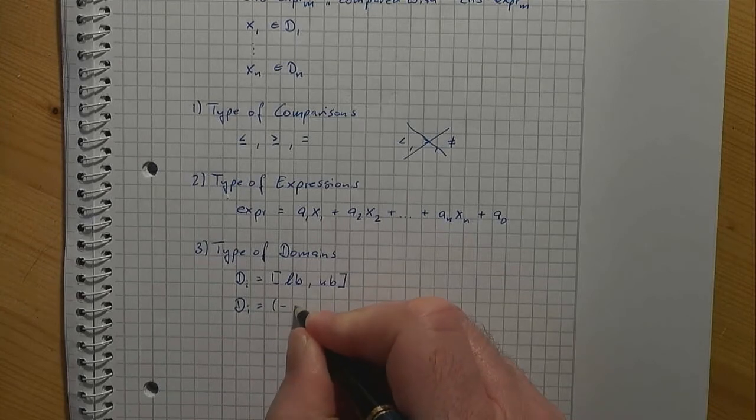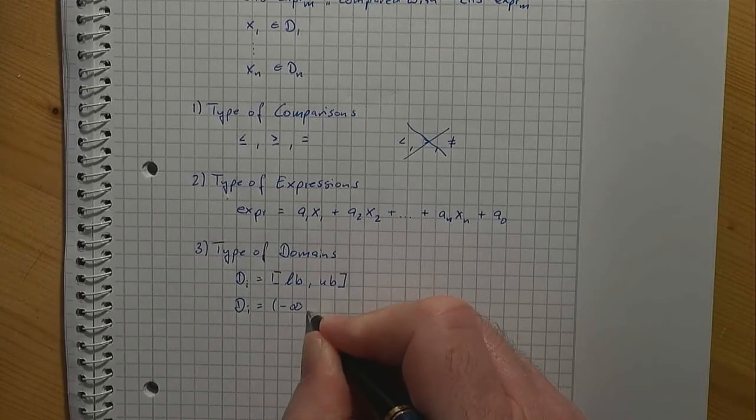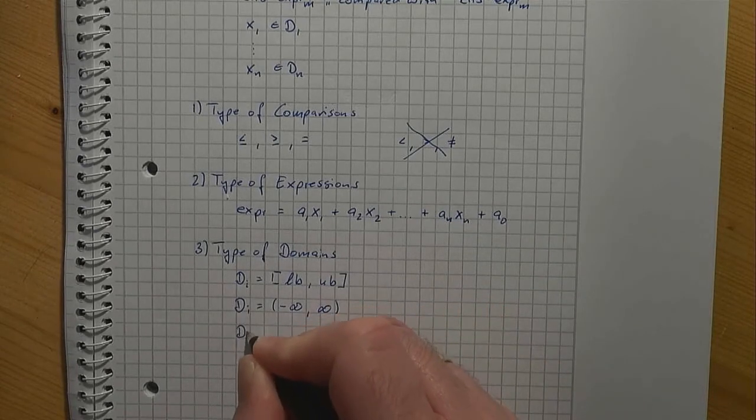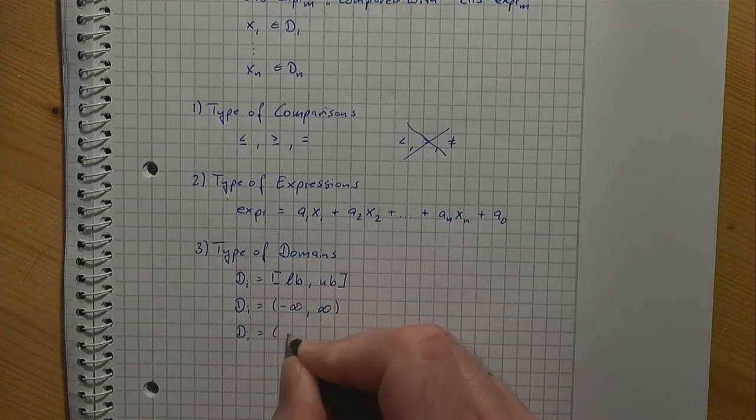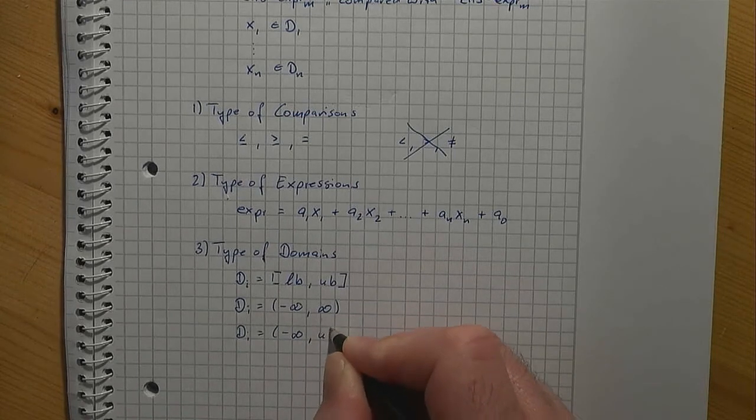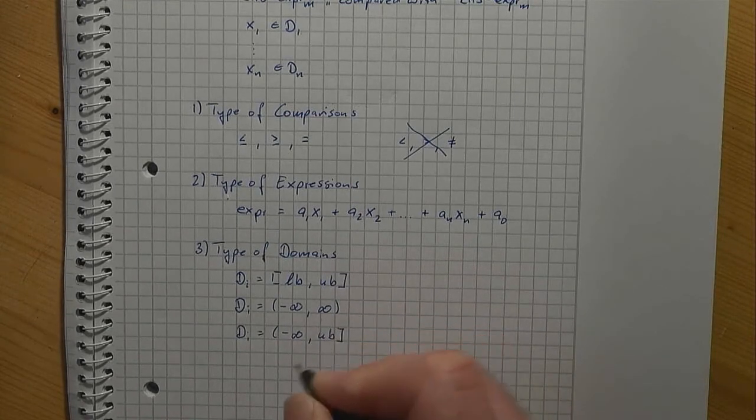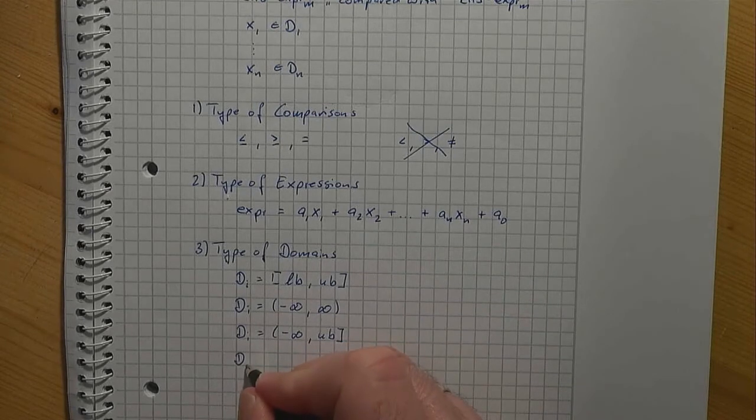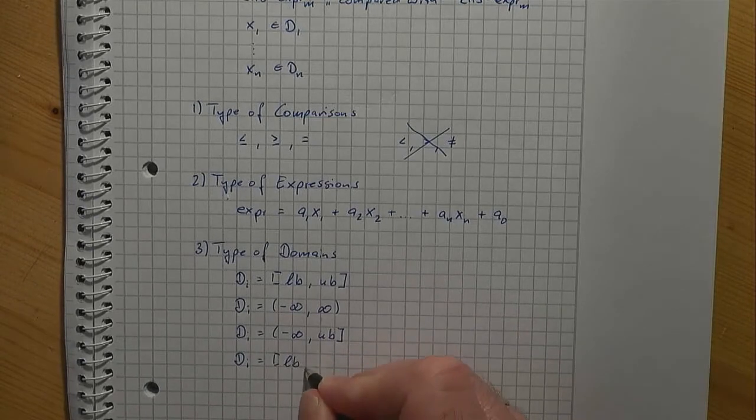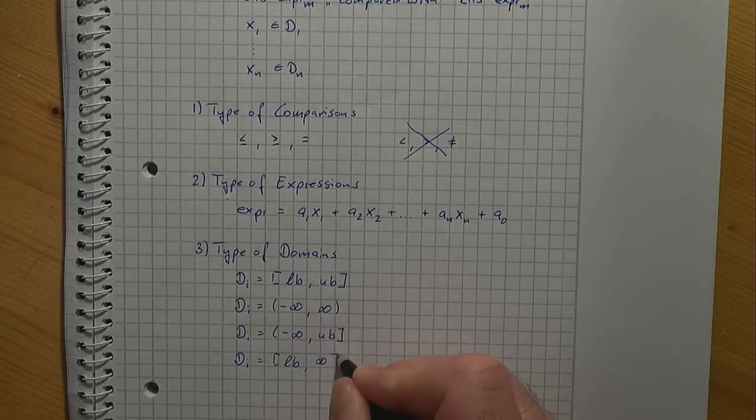...minus infinity up to plus infinity, or di equals minus infinity up to an upper bound, or di equals lower bound up to plus infinity.